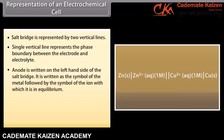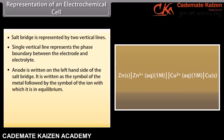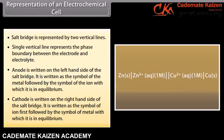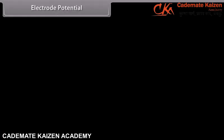Observations in electrochemical cell: The voltmeter shows a deflection with a reading of 1.10 volt, which indicates that a potential difference is set up between the two electrodes and conventional current is flowing through the circuit from copper to zinc rod. After some time, a film of copper is deposited on the copper rod, and the zinc rod is found to have lost weight.